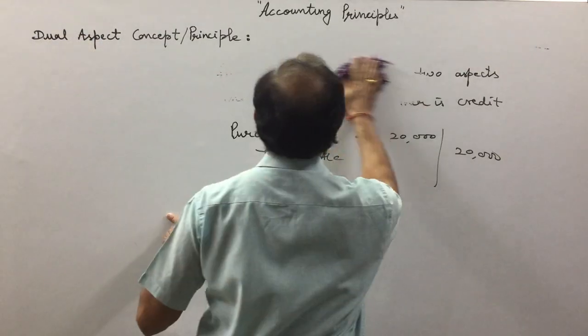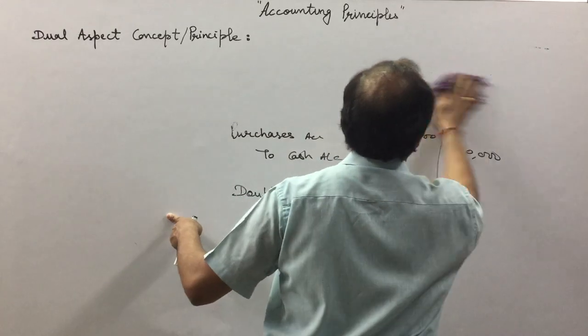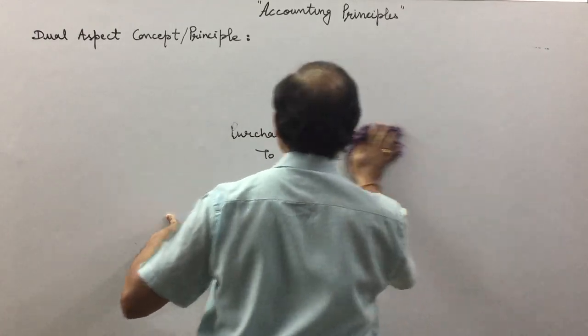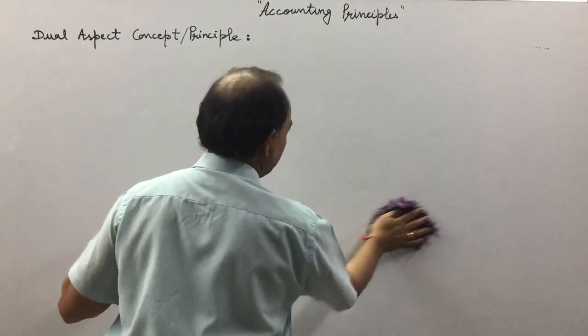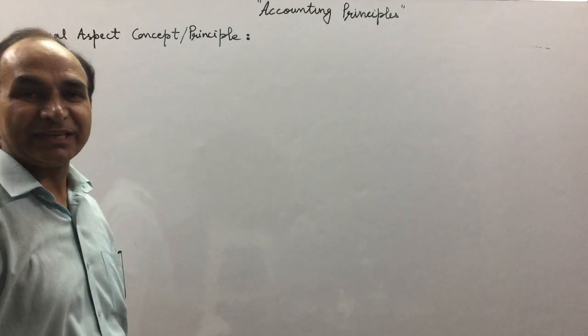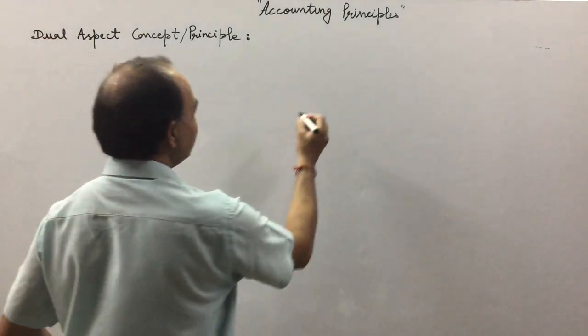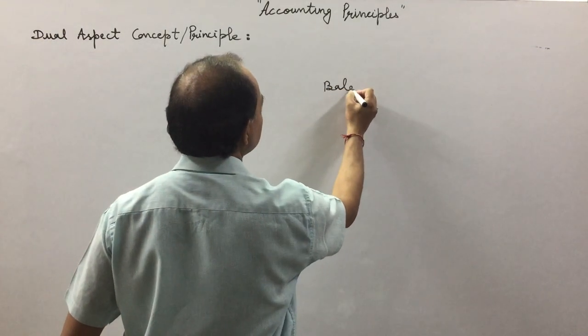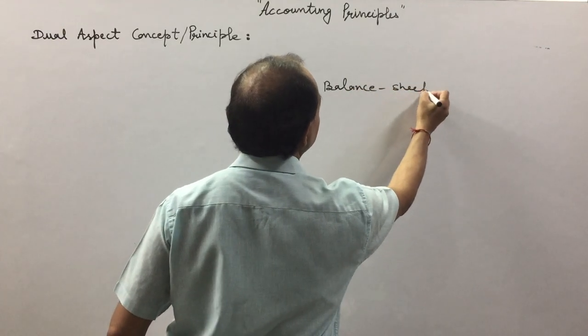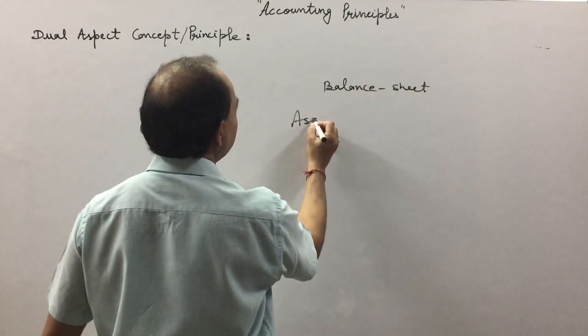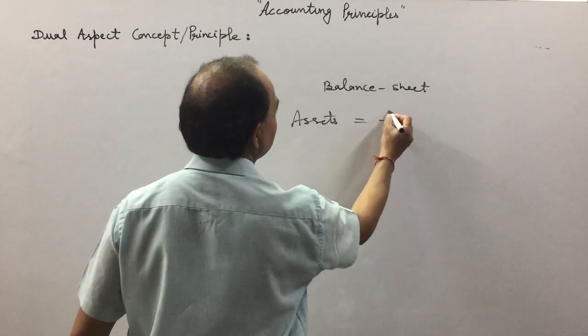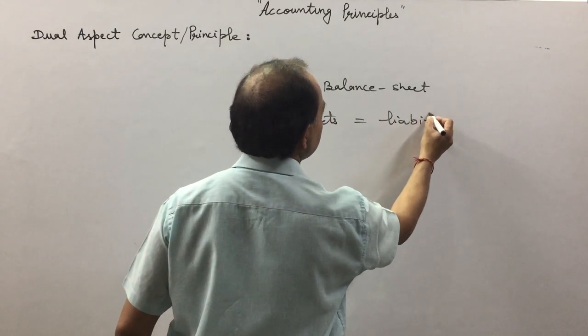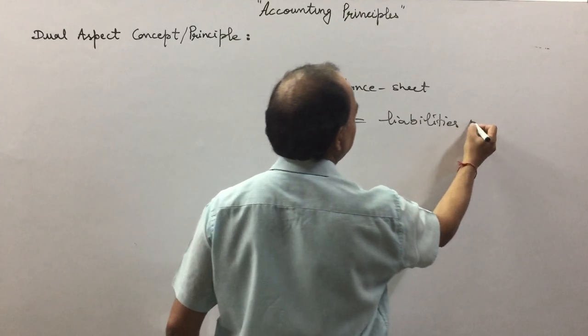...that the balance sheet of a firm or company always has two sides. In the balance sheet, assets are always equal to liabilities plus...